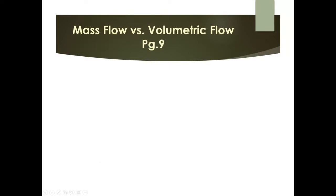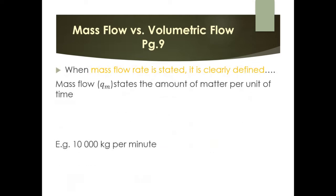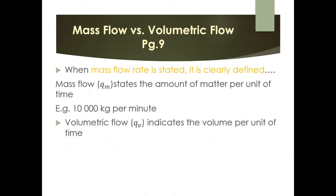Mass flow rate (Qm) states the amount of matter per unit time — for example, 10,000 kilograms per minute. It is clearly defined because we know the density, so we know the actual mass. Volumetric flow (Qv) indicates the volume per unit of time — such as 10,000 cubic meters per hour.